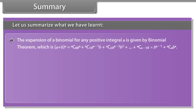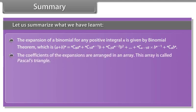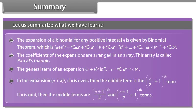Summary: The expansion of a binomial for any positive integral n is given by the binomial theorem. The coefficients of the expansions are arranged in an array called Pascal's triangle. The general term of an expansion is T(r+1). In the expansion of (a + b)^n, if n is even, the middle term is the (n/2 + 1)th term. If n is odd, the middle terms are the ((n+1)/2)th and ((n+1)/2 + 1)th terms.